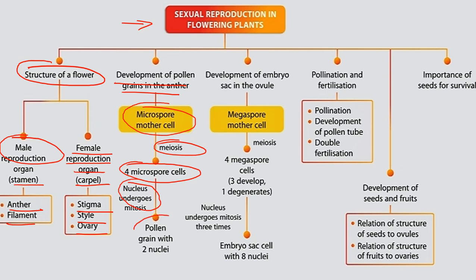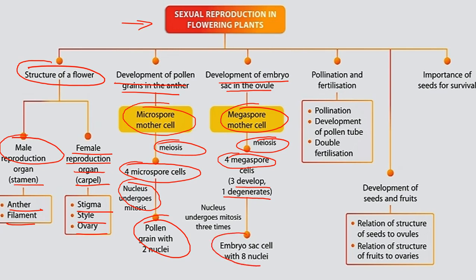The microspore mother cell undergoes meiosis forming four microspore cells; the nucleus then undergoes mitosis producing a pollen grain with two nuclei. For the embryo sac in the ovule, the megaspore mother cell undergoes meiosis to form four megaspore cells — three degenerate and one remains; the nucleus undergoes mitosis three times producing an embryo sac with eight nuclei. We also covered pollination, fertilization, development of the pollen tube, and double fertilization.